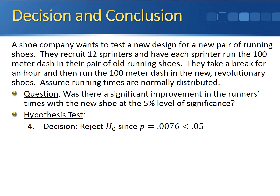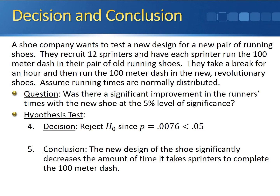As for our decision, we'll reject the null hypothesis since the p-value of 0.0076 is less than 0.05, the level of significance. We conclude that the new design of the shoe significantly decreases the amount of time it takes sprinters to complete the 100-meter dash.